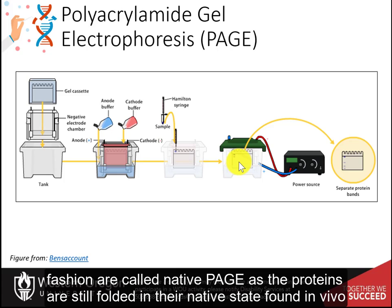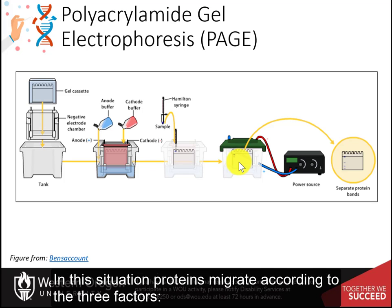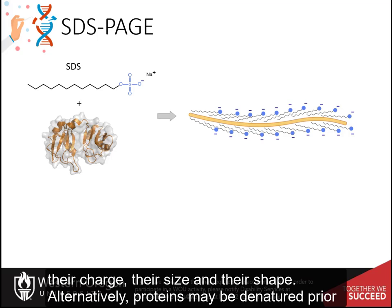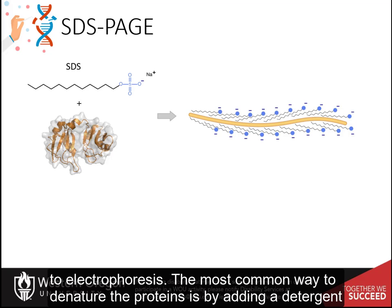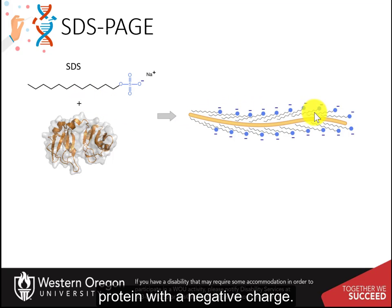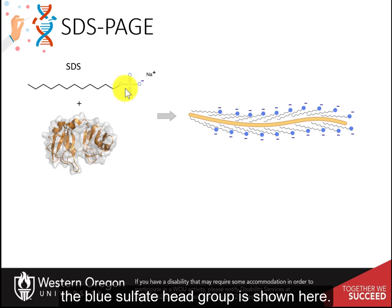PAGE gels run in this fashion are called native PAGE, as the proteins are still folded in their native state found in vivo. In this situation, proteins migrate according to three factors: their charge, their size, and their shape. Alternatively, proteins may be denatured prior to electrophoresis. The most common way to denature proteins is by adding a detergent such as sodium dodecyl sulfate, or SDS. This not only denatures the protein but coats it with a negative charge — the blue sulfate head group is shown here.